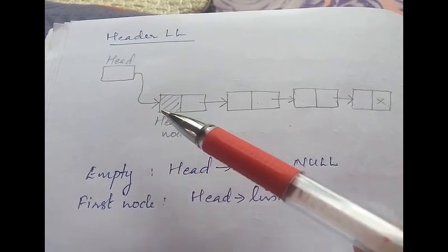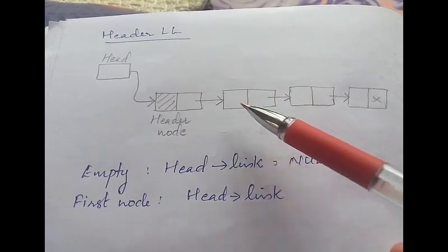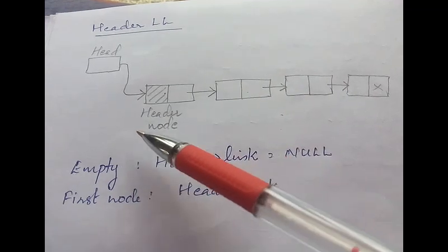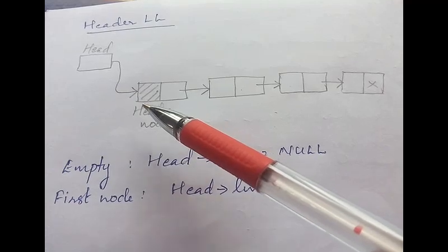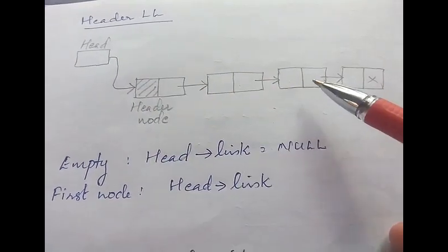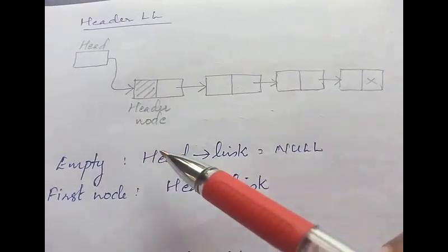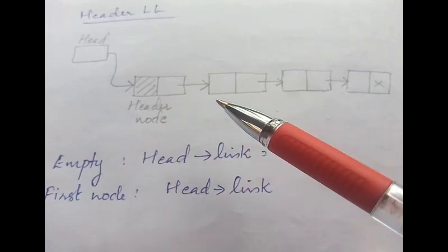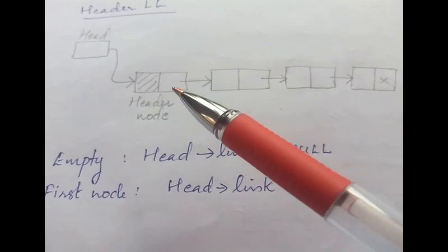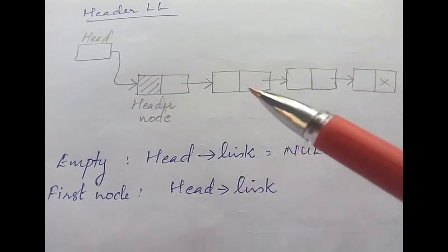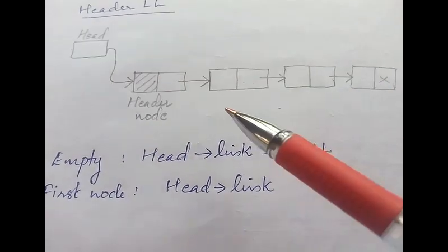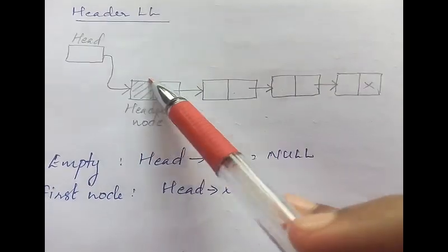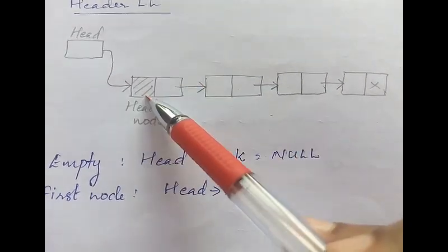The header node does not store an element of the list. The first element of the list will be stored in the node next to the header node. So the first node is a special node called the header node, and its data part contains special values — information or details about the list rather than the actual stored values. The actual values are stored starting from the node next to the header node. An empty header linked list means head's link is null.